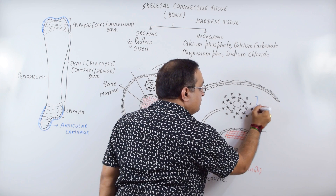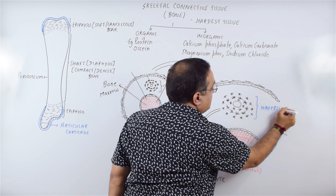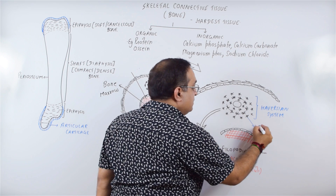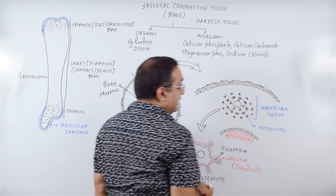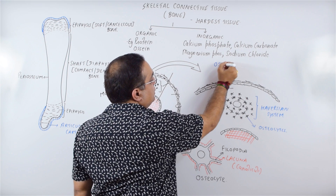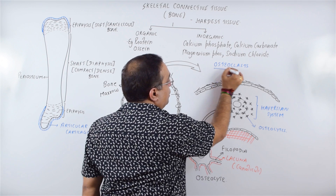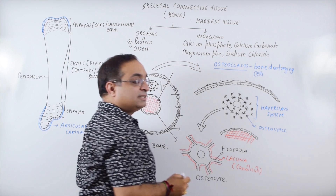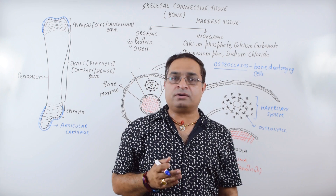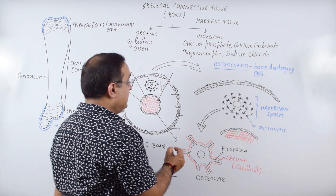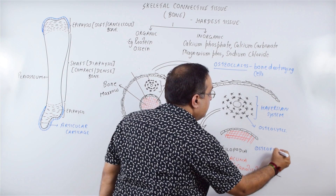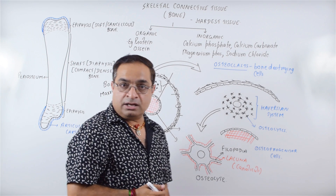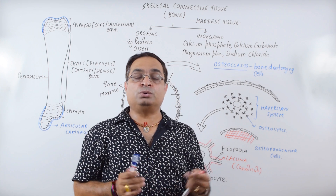This structure we have drawn is the Haversian system, also called the osteon. This is the Haversian canal, and these cells are osteocytes. In addition to osteoblasts and osteocytes, there are also osteoclasts — the bone-destroying or bone-remodeling cells. These play an important role in repairing and restructuring fractured bone. They develop from osteoprogenitor cells.